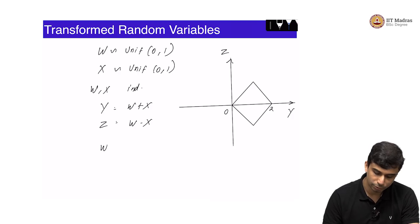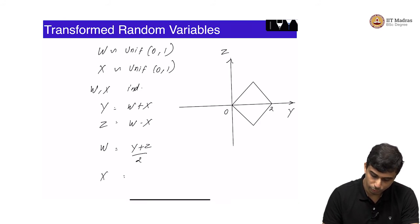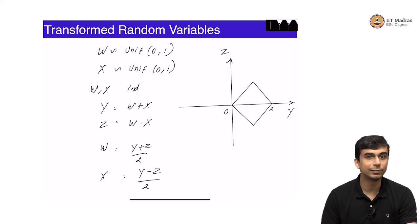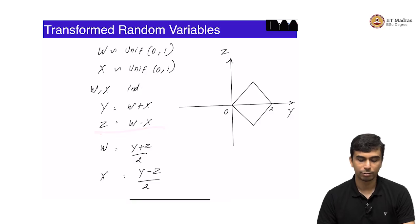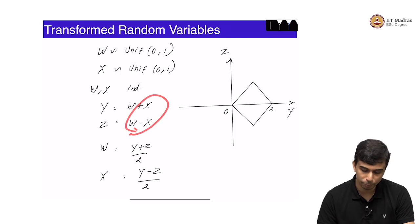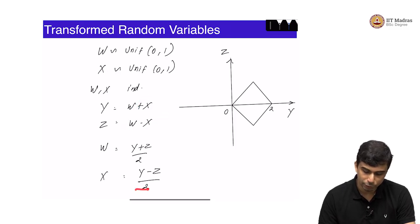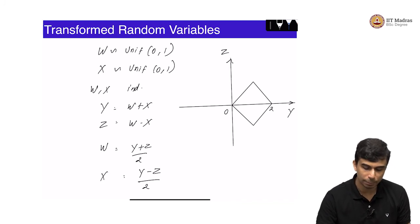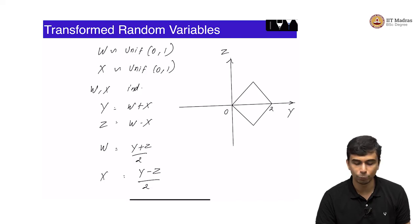So now: what is the joint density of y and z? Here is where we use the change of variable rule. First, is this an invertible transform? From w and x we got y and z, but from y and z can we get back w and x? Yes, easily: w equals y plus z by 2, and x equals y minus z by 2. So q of y comma z is y plus z over 2, and r of y comma z is y minus z over 2.